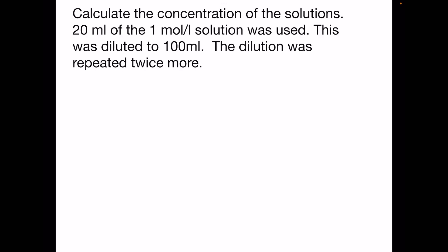To carry out serial dilution calculations you need to use the C1V1 equals C2V2 equation which you can find at the front of your data book. C1 is the concentration of the original solution, V1 is the volume, C2 is the concentration we're trying to calculate and V2 is the volume that you dilute to.